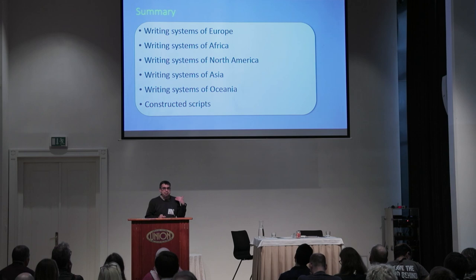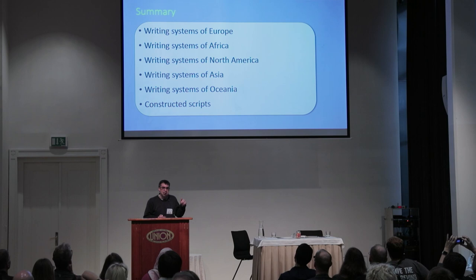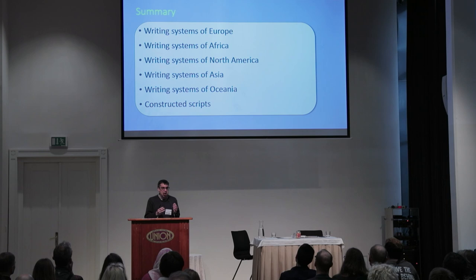I'm going to go through different continents, starting with Europe. There are two continents missing. There are no indigenous writing systems that we know about in South America. The Incas did have a system of knots in cords called quipu, but we think that was just a kind of record-keeping system — it wasn't actually encoding their language, though it may have been. And Antarctica doesn't have any indigenous people, so there are no writing systems there.